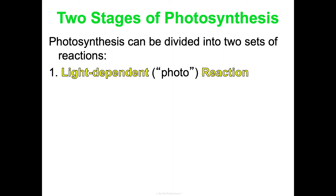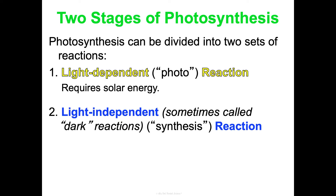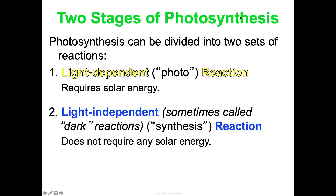There are two steps. We have the light-dependent reaction, also known as the 'photo' part of photosynthesis, because photo means light. This step requires solar energy. The second step is the light-independent reaction. Some people refer to it as the dark reaction because you don't need solar energy to do it. This is also thought of as the 'synthesis' part of photosynthesis, because synthesize means to make — and so this is where we're actually going to make the sugar. Light first, sugar comes second.